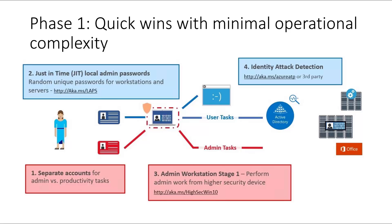What are the easiest things we can do without impacting operations? Use separate accounts — if you're an administrator, maybe a domain admin or global admin in Office 365, you need a separate account for administrative privileges and a separate account for standard end-user productivity tasks. Also use just-in-time local admin passwords — don't use the same local administrator password on all workstations and servers. Use LAPS. Make sure you're securing your workstation or even using a dedicated admin workstation. And do identity attack detection.